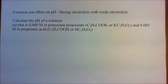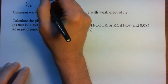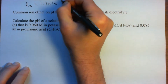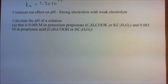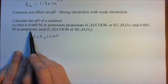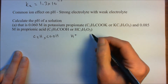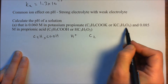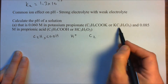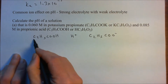For the first example, we're given potassium propionate and propionic acid. We need the Ka for propionic acid, which is 1.3 times 10 to the minus 5. We're going to use the ICE method — Initial, Change, and Equilibrium Concentrations. We have C₂H₅COOH, our propionic acid, dissociating to produce H⁺. The common ion between the two is C₂H₅COO⁻, the conjugate base.